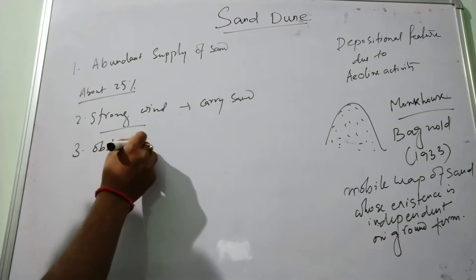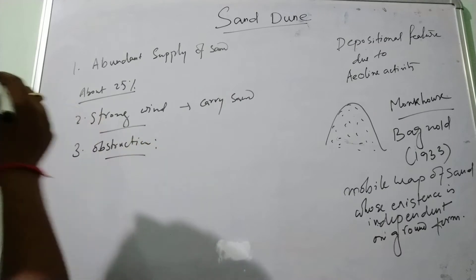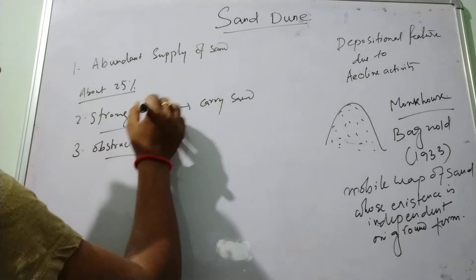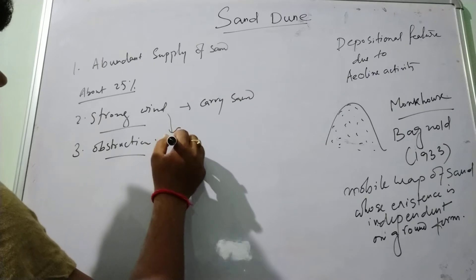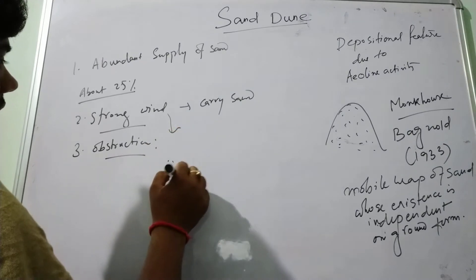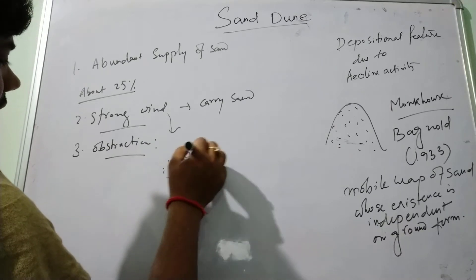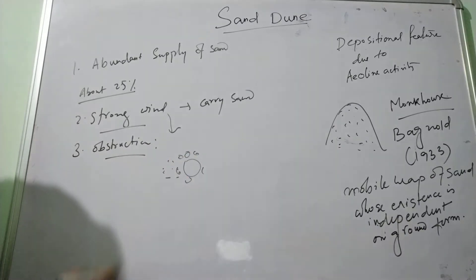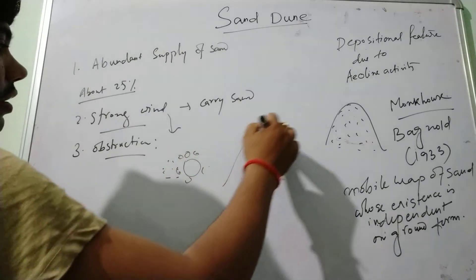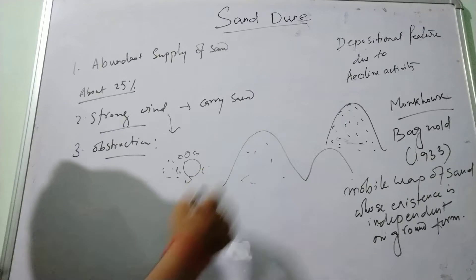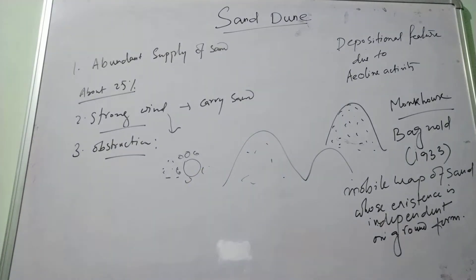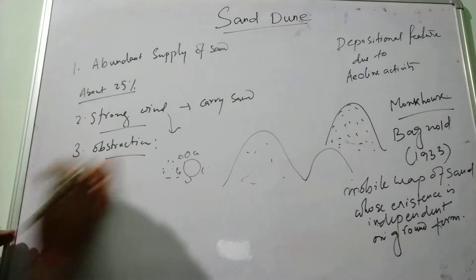The third factor is obstruction, which is another most important factor for the formation of sand dunes. When the wind carries the sand, it creates an obstruction and after the sand is deposited in and around the obstruction, once the deposition is started it will form a sand dune. There are different forms of sand dunes that we will discuss.